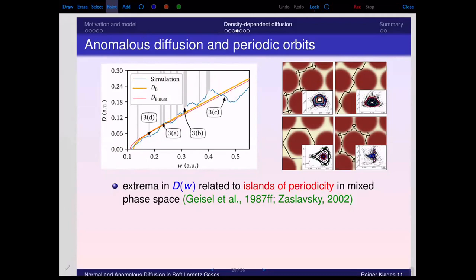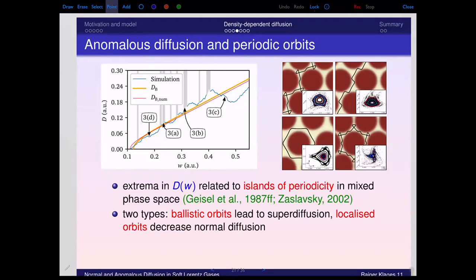Our contribution, which is new, is that we were the first to study in detail the parameter dependence of the diffusion constant and how it changes under parameter variation. There are also labels c and d, which correspond to local minima in the curve. At these parameters there are localized periodic orbits — hexagonal and more complex hexagonal orbits. Whenever you have these islands of stability, the diffusion coefficient is diminished. So local minima correspond to localized orbits that suppress diffusion, while local maxima correspond to ballistic orbits.